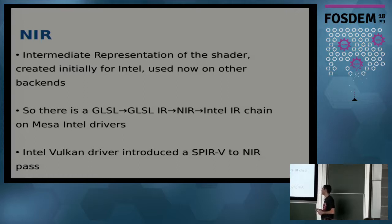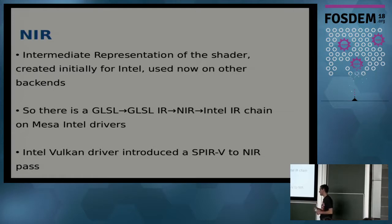For example, on the Intel Mesa driver, the chain is: you start with a GLSL shader, it gets parsed into the GLSL IR representation, then that is translated to NIR, and finally converted to a lower-level backend representation. When Intel created the Vulkan driver, they created a SPIR-V to NIR pass, bypassing one of the intermediate languages that existed before.